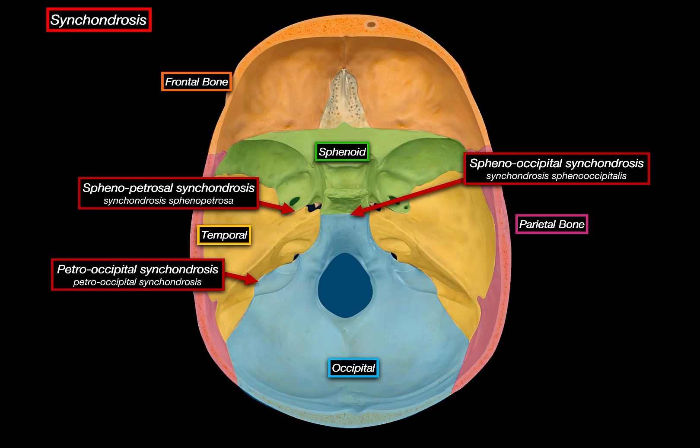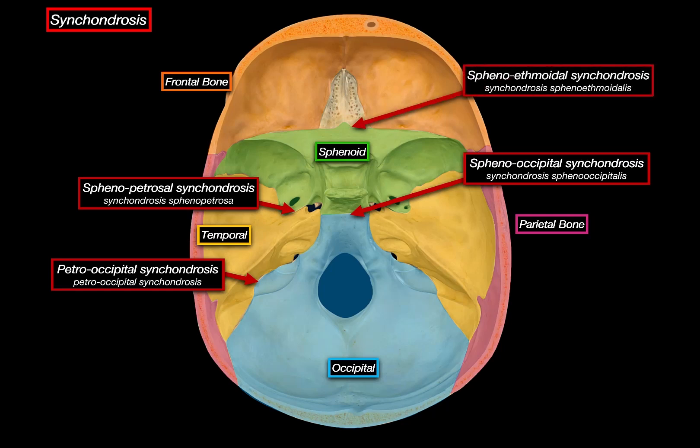The sphenooccipital synchondrosis connects the body of the sphenoid with the basilar part of the occipital bone, and usually ossifies between the age of 18 and 25. Then there is the sphenoethmoidal synchondrosis, lying between the sphenoid and the ethmoid bones, and typically fuses around the age of 10.